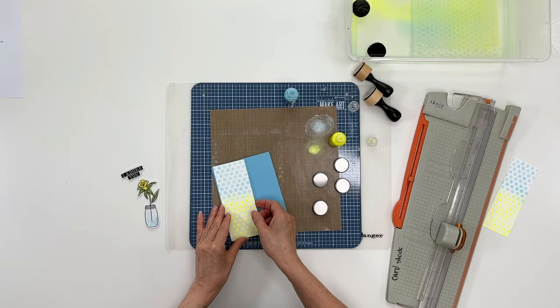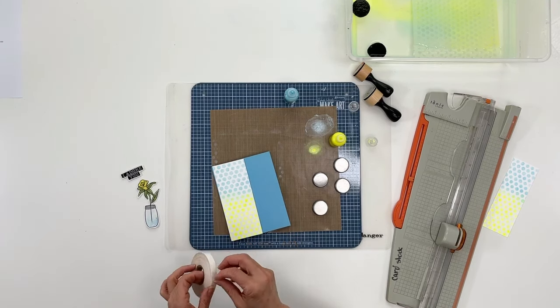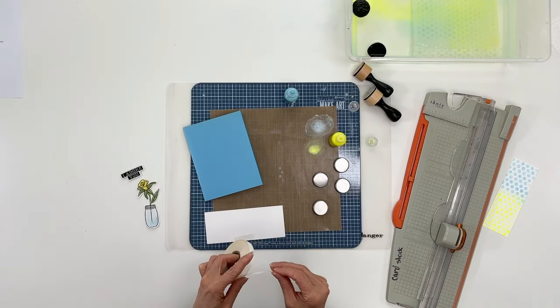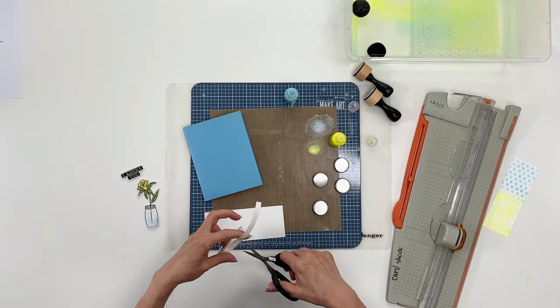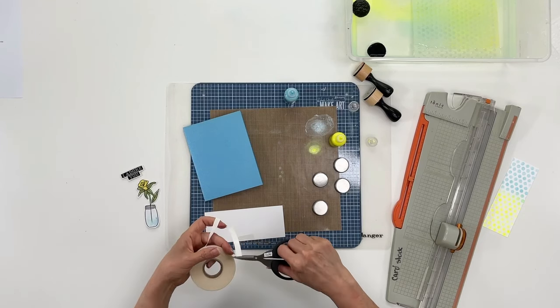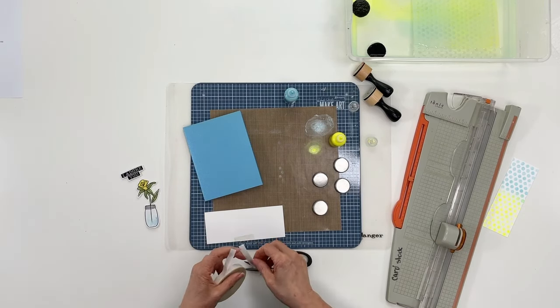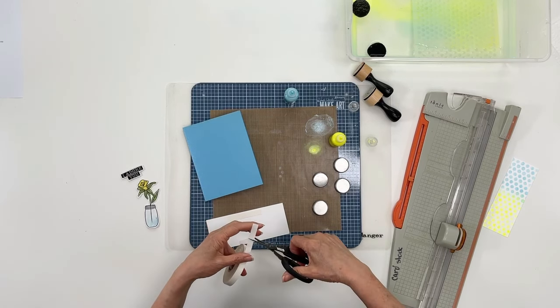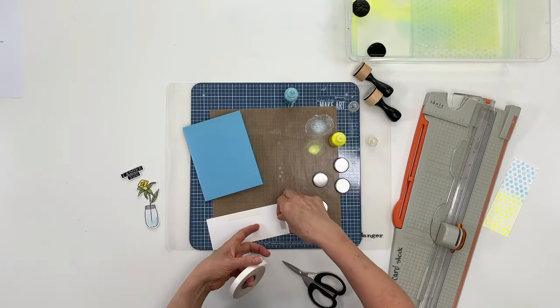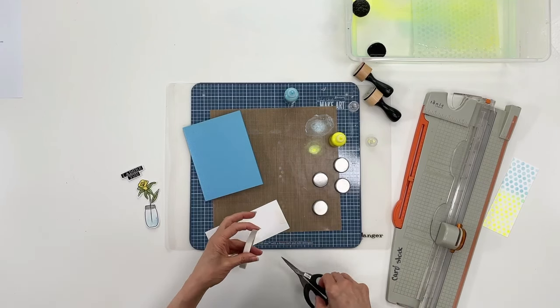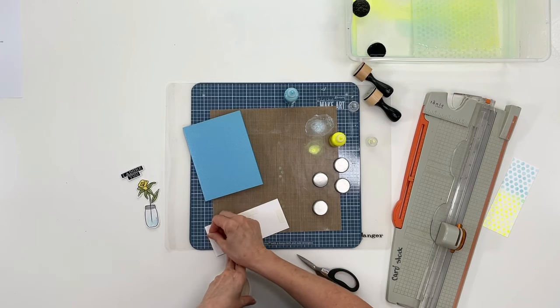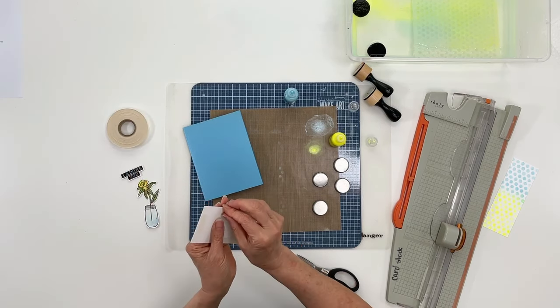Now we're going to glue this down. I'll get some double-sided tape here. I'm just going to put one piece there, here, another piece over here, and I'll take off the liner paper.